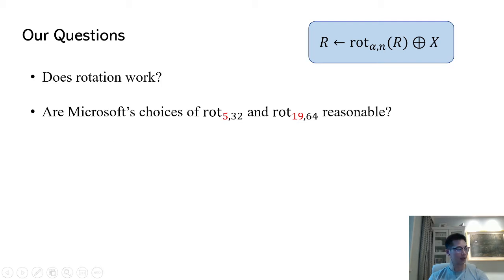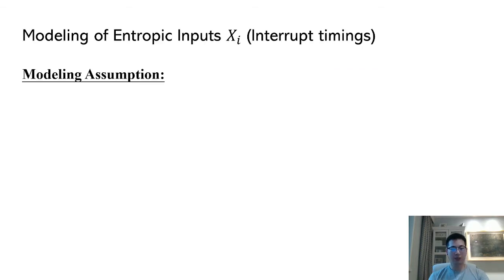Finally, is rotation really the best way for entropy accumulation? Can rotation be replaced by a better permutation? To start answering these questions, the first priority is to model input sources.